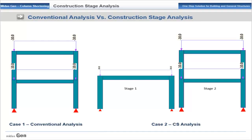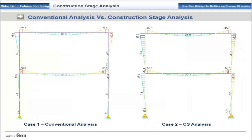Take the example of a simple frame comparing Case 1, conventional analysis, and Case 2, construction stage analysis with two stages — in Stage 1 the support and first level is constructed, and in Stage 2 the next level is constructed. The moments vary significantly between the two cases: the moment at the support is 8.4 kNm in Case 1, whereas in Case 2 it is 17.1 kNm. With shortening of the structure, moments increase ultimately.